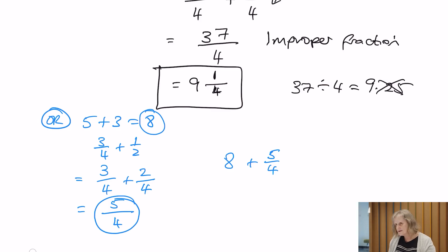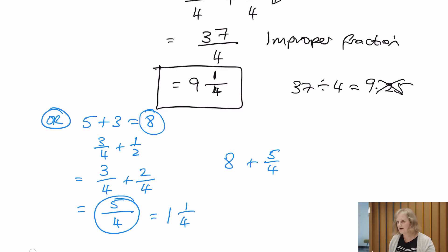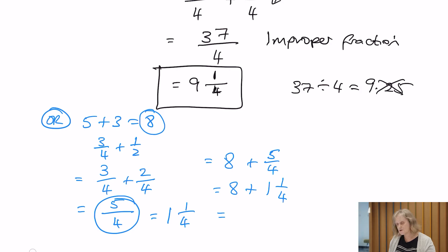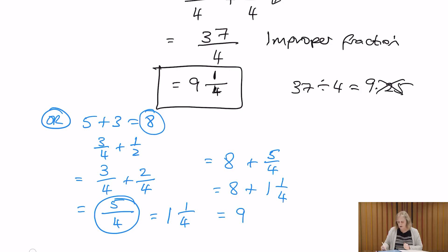We've got our 8 as our whole number, and now we're going to add that to 5 over 4. This fraction is improper, so we can change it into a mixed number. 5 over 4: how many 4's go into 5? That's 1. 1 times 4 is 4, so we've got 5 subtract 4 — a remainder of 1, and the denominator stays the same. So we can change that into 1 and 1 over 4. Then we add the two together: 8 plus 1 gives us 9 as the whole number, and then we've got a quarter. So our final answer is 9 and 1 over 4.